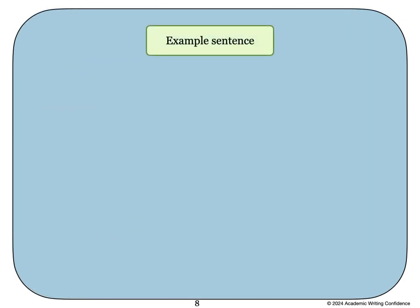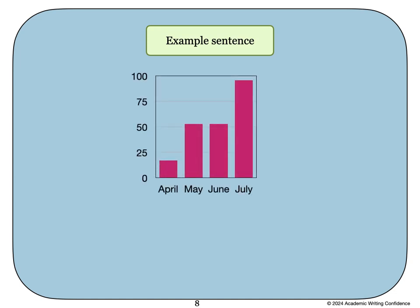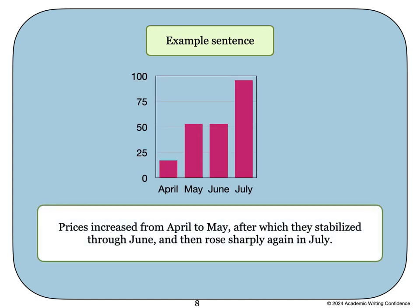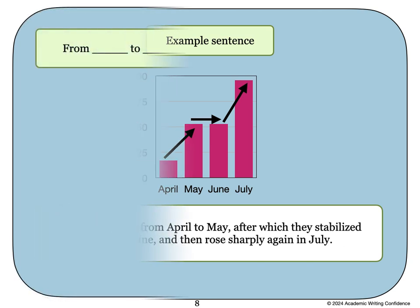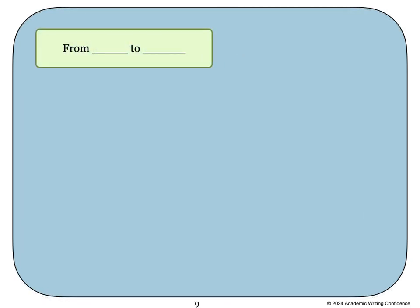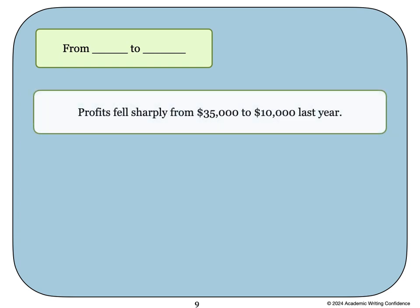Here is an example sentence to describe this bar chart. Prices increased from April to May, after which they stabilized through June, and then rose sharply again in July. Another common phrase that is used is from something to something. Profits fell sharply from $35,000 to $10,000 last year.